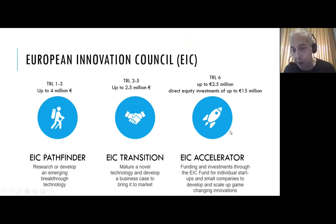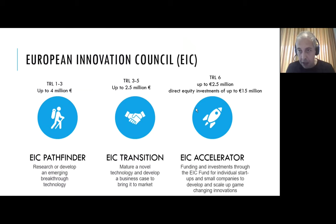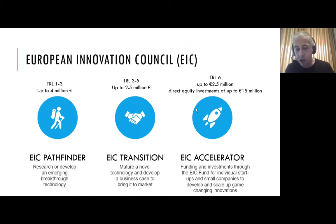You may have heard about EIC Accelerator — this is a very famous grant in the European Union. It provides support from TRL five onwards. You must have finished your product to at least a demo or validation in a relevant environment — you need to have completed TRL five to apply. It is a huge grant of 2.5 million euros. The good thing is you can apply as a single company; you don't need to create a consortium. It is open to small companies and individual startups.